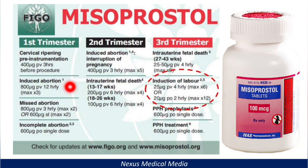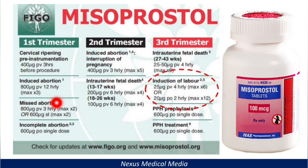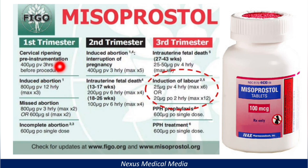For induced abortion in the first trimester, you give 800 micrograms sublingually every 12 hours. In case of missed abortion, give 800 micrograms per vaginally every three hours, or 600 micrograms sublingually. For incomplete abortion, 600 micrograms orally as a single dose. In the second trimester for interruption of pregnancy, give 400 micrograms per vaginally every three hours.